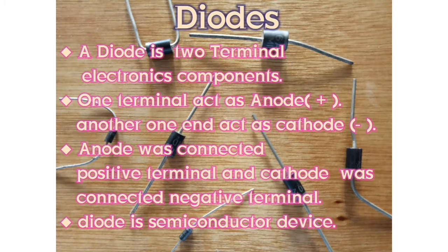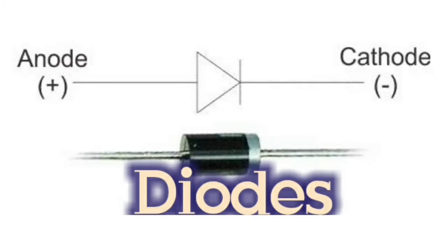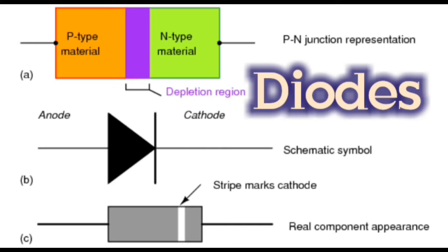Diode. A diode is a two terminal electrical component. One terminal acts as anode, another terminal acts as cathode. Anode is connected to the positive terminal, cathode is connected to the negative terminal.